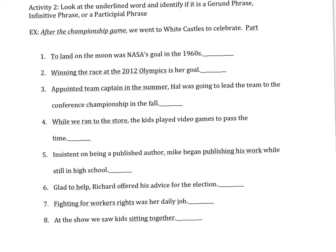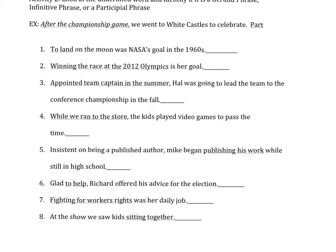The example: after the championship game, we went to White Castles to celebrate. After the championship game is clearly a prepositional phrase. So we'll go through these. 'To land' — it's an infinitive phrase. 'Winning the race in the 2012 Olympics is her goal' — it's a gerund phrase; it's a noun, the subject of the sentence. 'Appointed team captain in the summer' is modifying a noun, therefore it's an adjective — it's a participle.